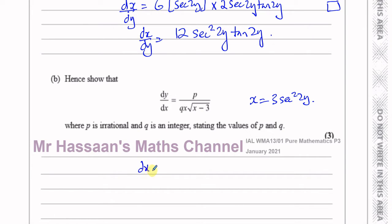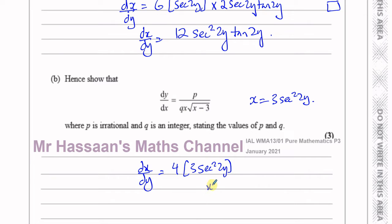So let's keep it as dx/dy equals 12 sec²(2y). Now I see x is 3 sec²(2y), so I can write this as 4 times 3 sec²(2y). This is going to become replaced with an x — this is basically what x is. So we got rid of the sec²(2y) and made it in terms of x. Now I've got to think about how to deal with the tan(2y).